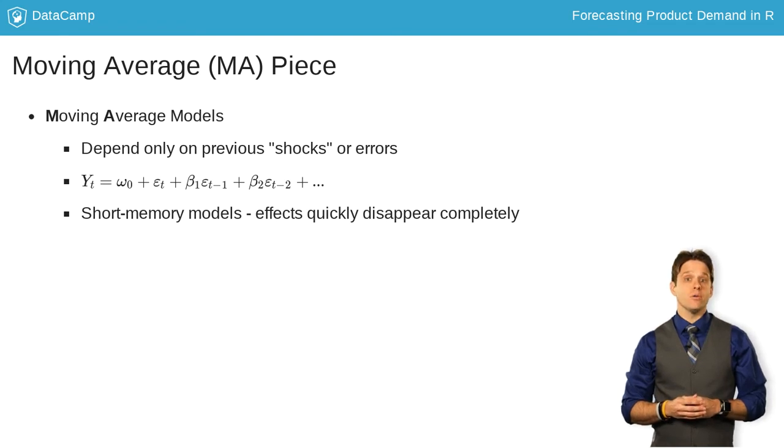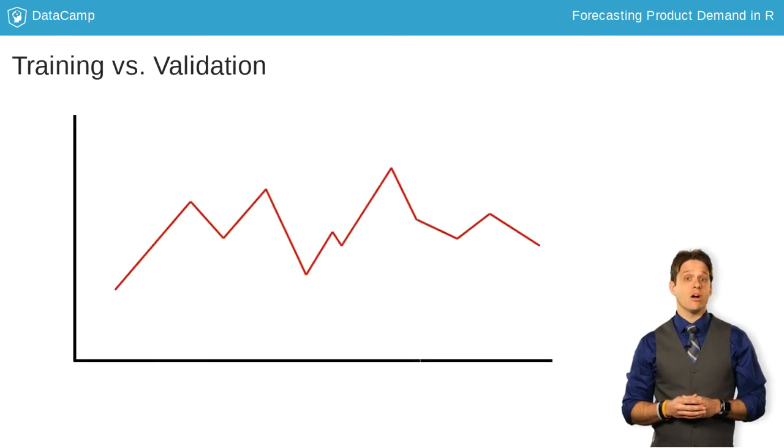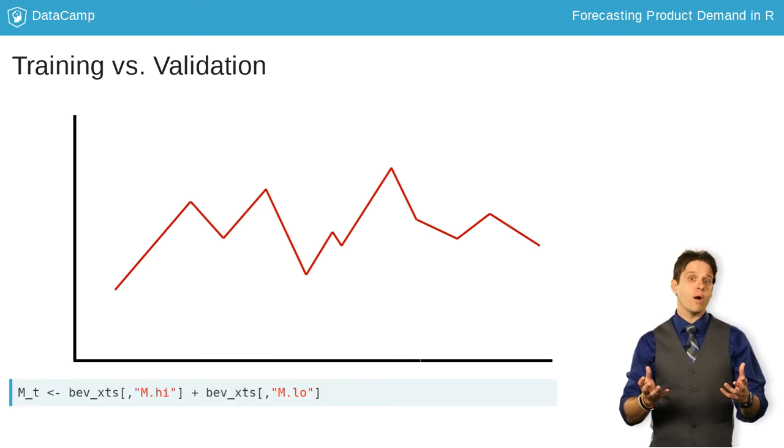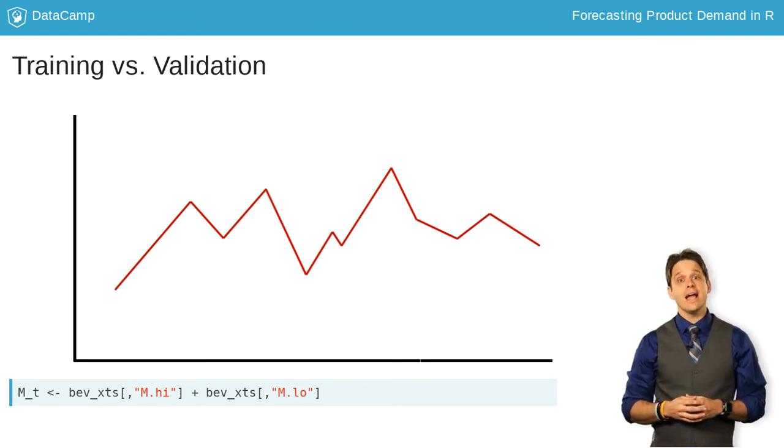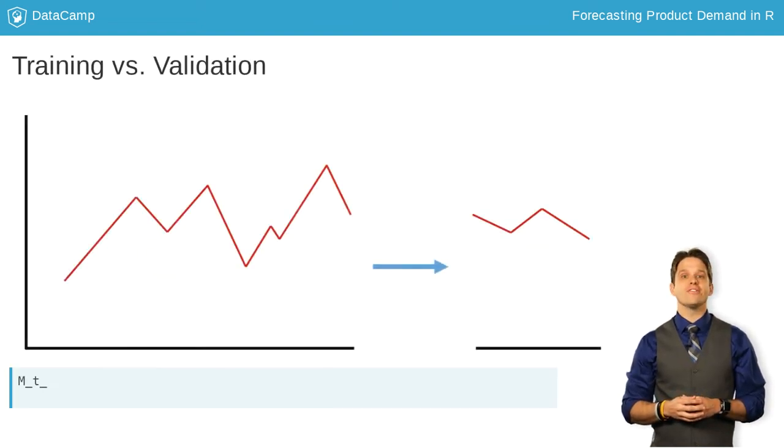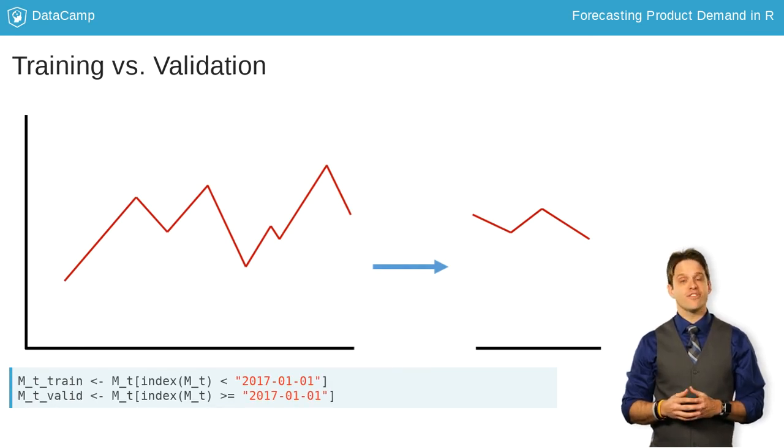Before we model, we still need to split our data into training and validation. It is always good practice to compare our predictions against real data to see how good our model really is. We are going to combine both products in the mountain region, high-end and low-end, into total mountain sales. Next, we are just splitting off the 2017 data for our sales in the mountain region for validation.